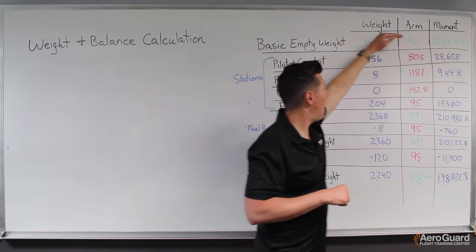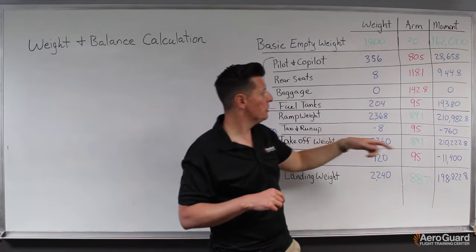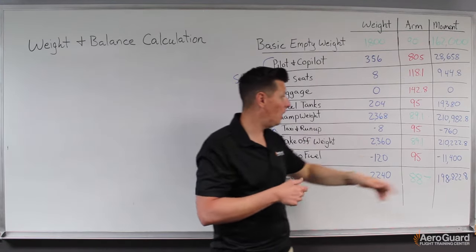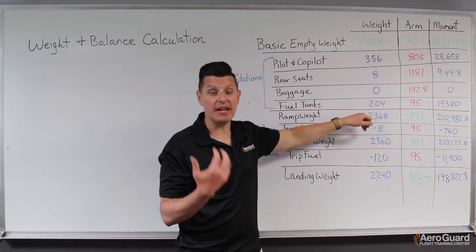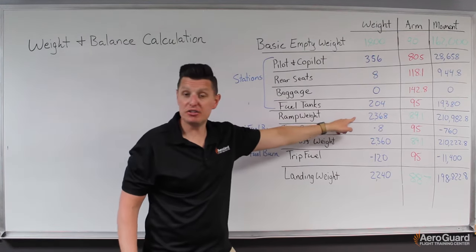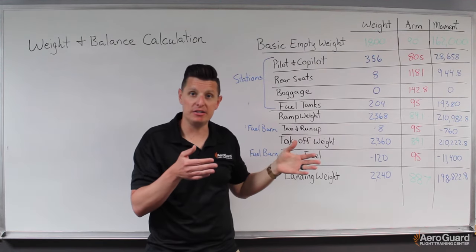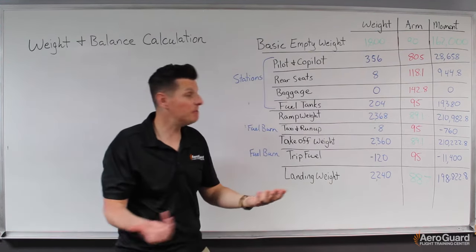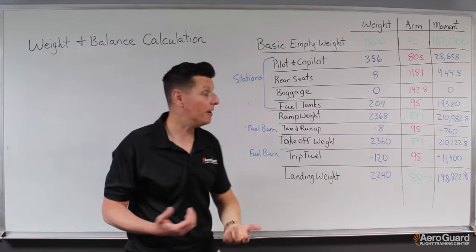Now we can add the total weights and total moments. We end up with a total amount of torque around the datum of about 210,000, with the weight creating it at 2,368 pounds. If I take that total moment and divide it by the total weight, the average location where all that weight is creating this moment is at 89.1 inches. This means our ramp weight today will have a center of gravity location of 89.1 inches.